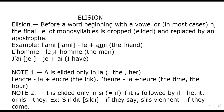L'homme instead of le homme, meaning 'the man'. J'ai instead of je ai, which means 'I have'. Note one: e is elided only in la, meaning 'the' or 'her'. For example, la encre becomes l'encre, meaning 'the ink'; la are becomes l'art. Note two: i is elided only in si, meaning 'if', when it is followed by il meaning 'he/it' or ils meaning 'they'. For example: si il becomes s'il; s'ils meaning 'if they'; s'il vient meaning 'if he comes'.